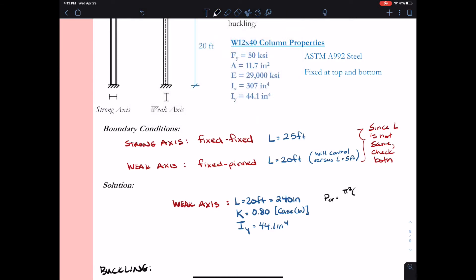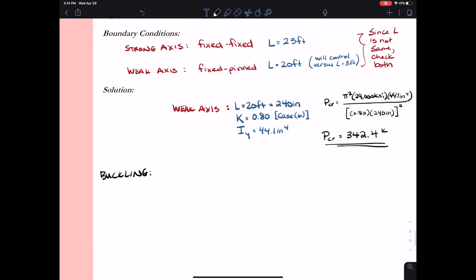Alright, so now I'm going to plug this into my P critical equation: pi squared EI over KL squared. So I have pi squared times E, which is 29,000 KSI, times I, which is 44.1 inches to the fourth, divided by the quantity of K, 0.80, times L, 240 inches total, squared. So this gives me a resulting P critical for weak axis buckling of 342.4 kips. It's important that I put my length in inches because I have both square inches and inches to the fourth in my numerator. So I need to make sure my length matches the units so that I get the correct units for P critical.